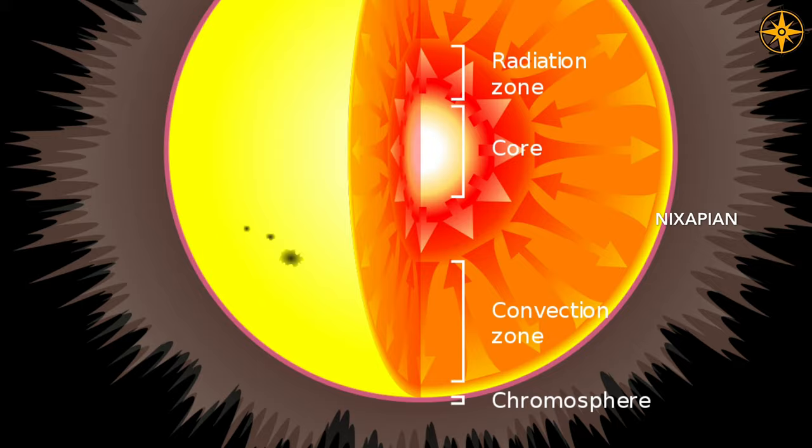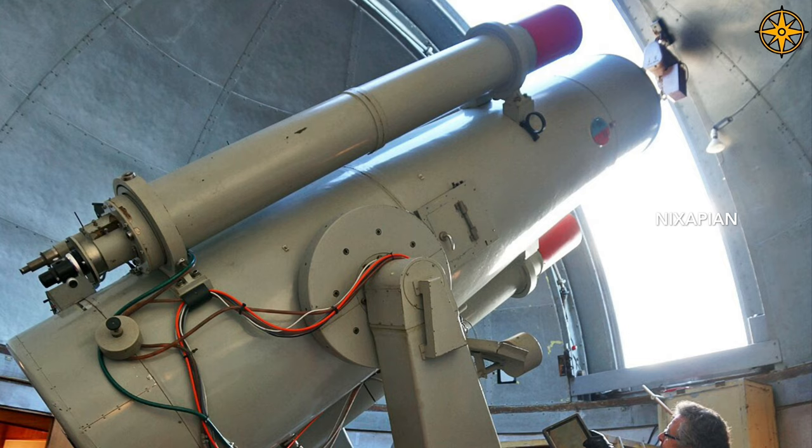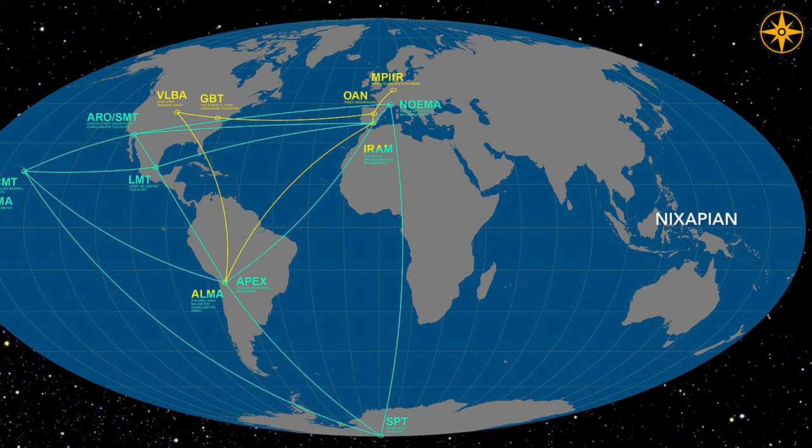Just imagine how big this black hole is. To see it, we needed a telescope the size of our Earth. But making a single telescope that size is not practical, so they used eight telescopes placed around the Earth. Scientists simultaneously observed the black hole from all eight telescopes, and as the Earth rotated, it simulated an Earth-sized telescope.